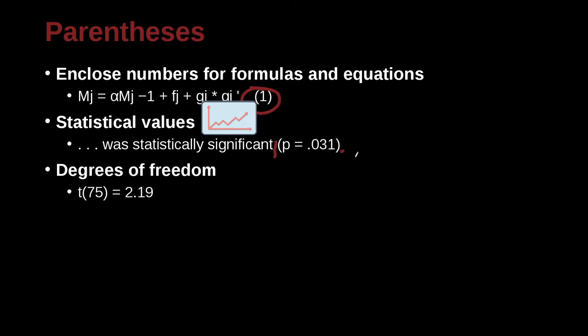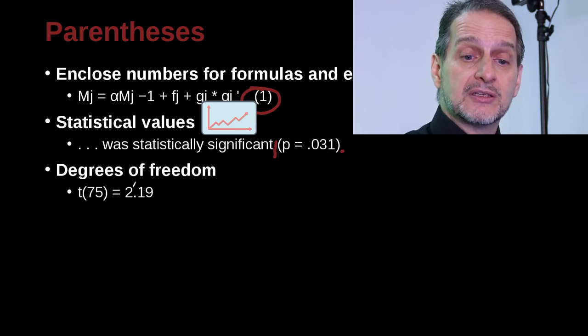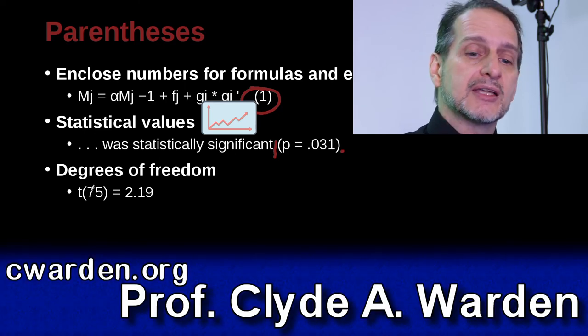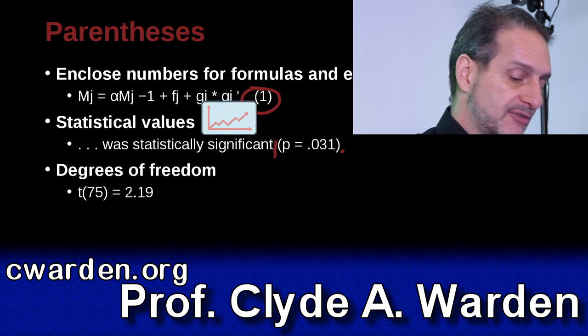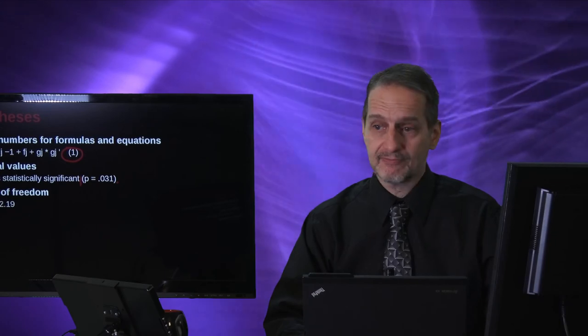You also use it in statistics for degrees of freedom. So for example, here the t-value, 75 degrees of freedom equals 2.17. That is to say that the statistical value is 2.17, but the degrees of freedom or the sample size is in this case 75.